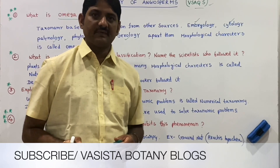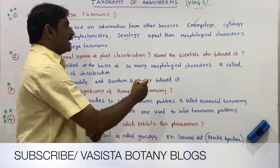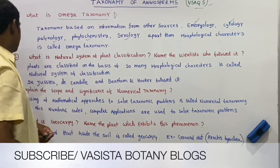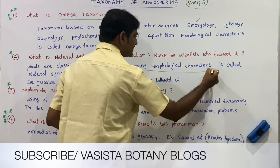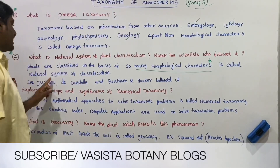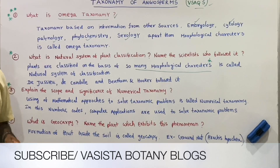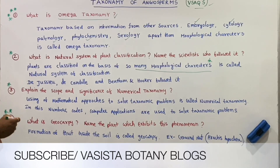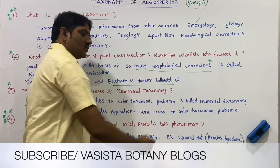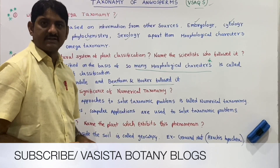Second question: What is the natural system of classification, and name the scientist who followed it? Plants are classified on the basis of many morphological characters — this is called the natural system of classification. The most widely accepted natural system of classification is Bentham and Hooker's classification.